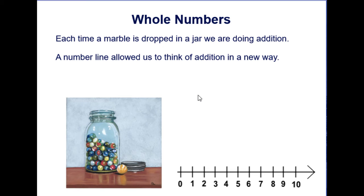Whole numbers. One way of looking at whole numbers is to think about placing marbles in a jar. Each time a marble is dropped in a jar, we are doing addition.